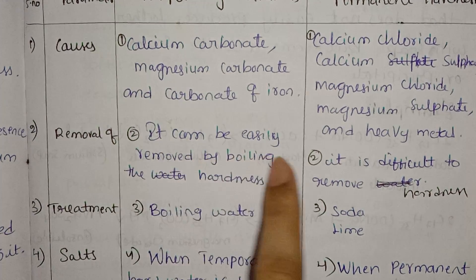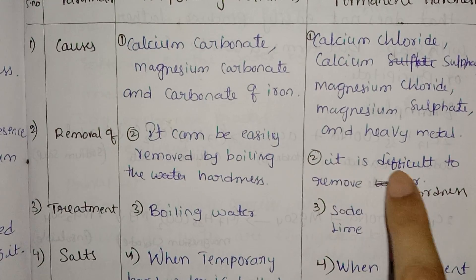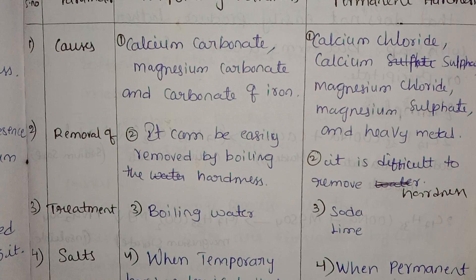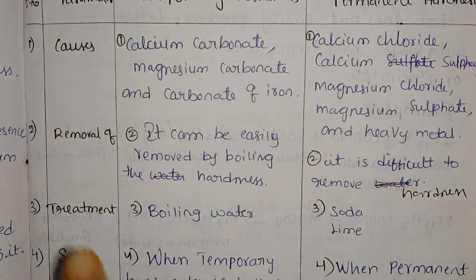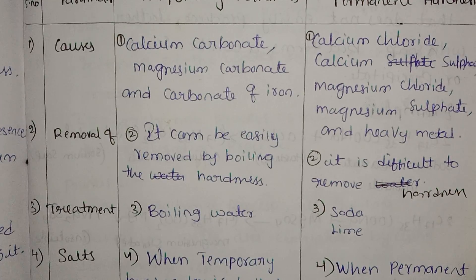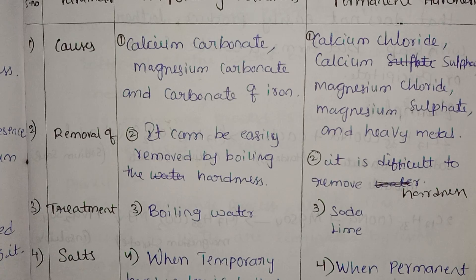Temporary hardness can be easily removed by boiling the water. Permanent hardness is very difficult to remove — it requires special treatment methods like the Permutit process, boiling with soda lime, or other chemical treatments.